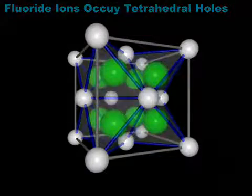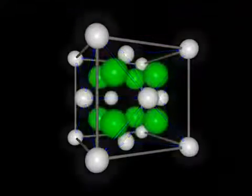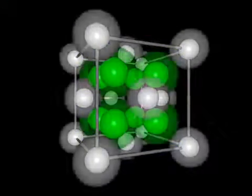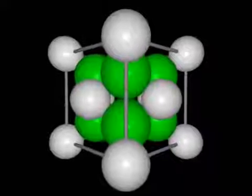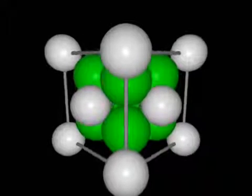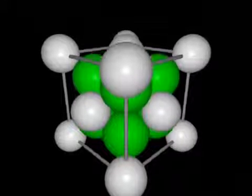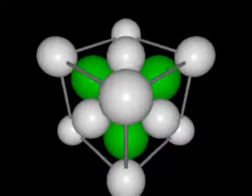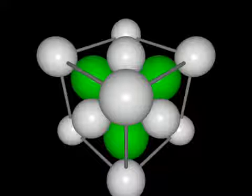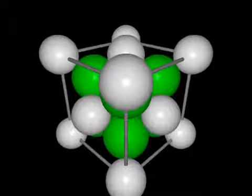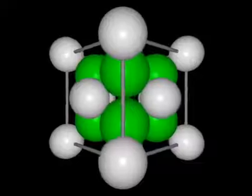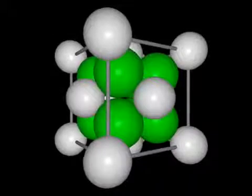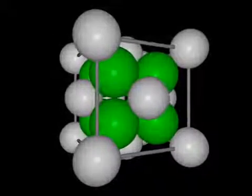Let us examine a space-filling model of the fluorite structure. The space-filling model shows us that the array of calcium ions is greatly expanded to accommodate the fluoride ions. The primary reason for the adoption of this arrangement is stoichiometry.